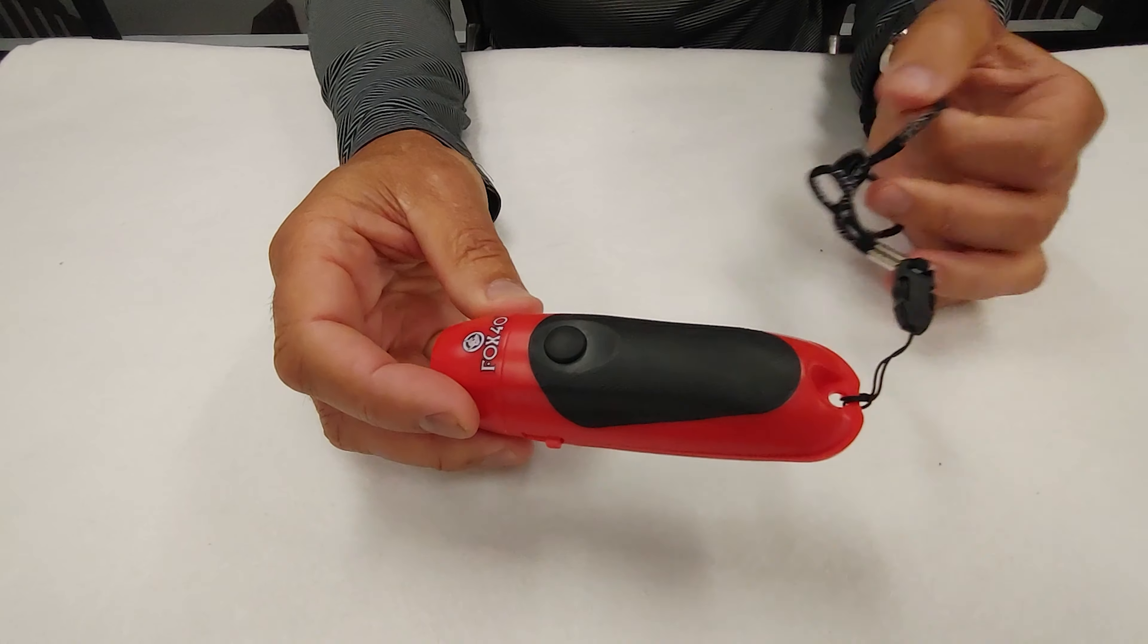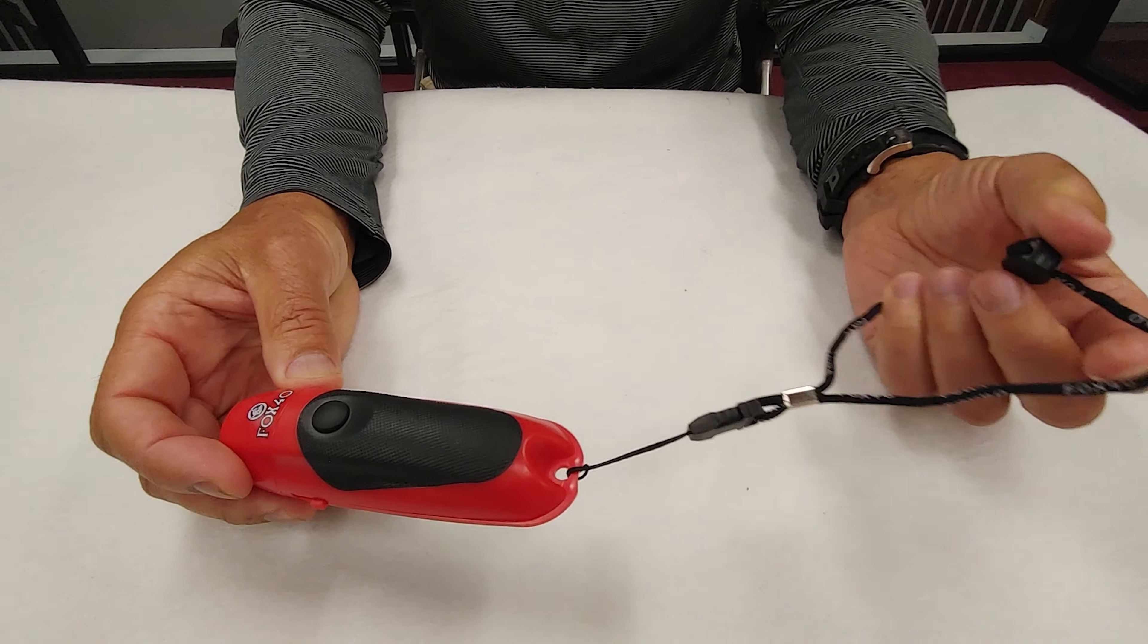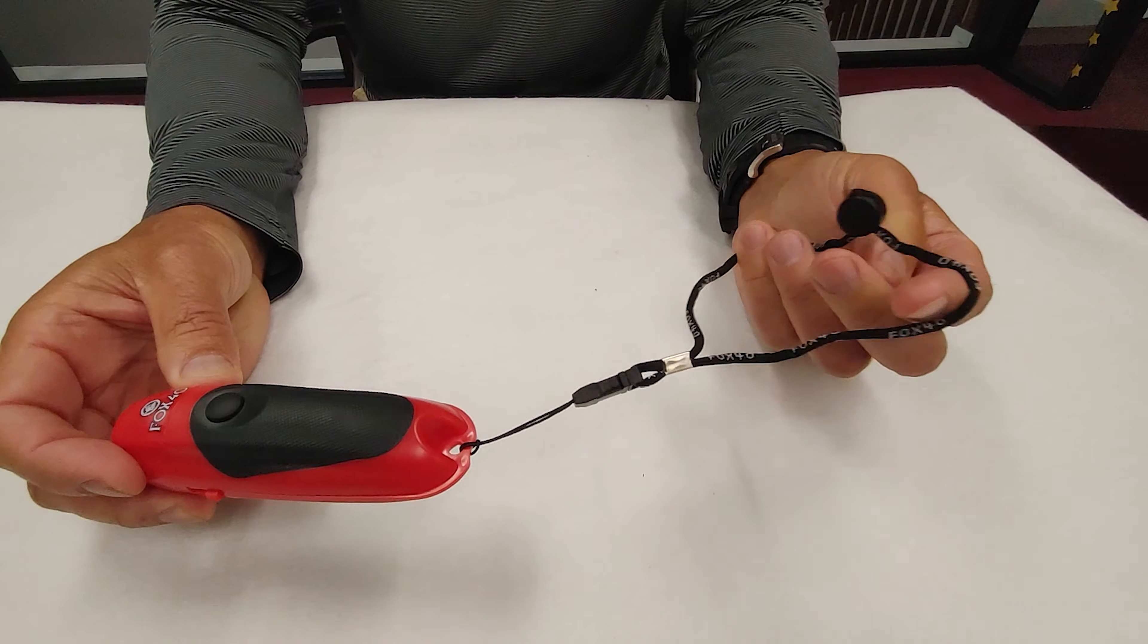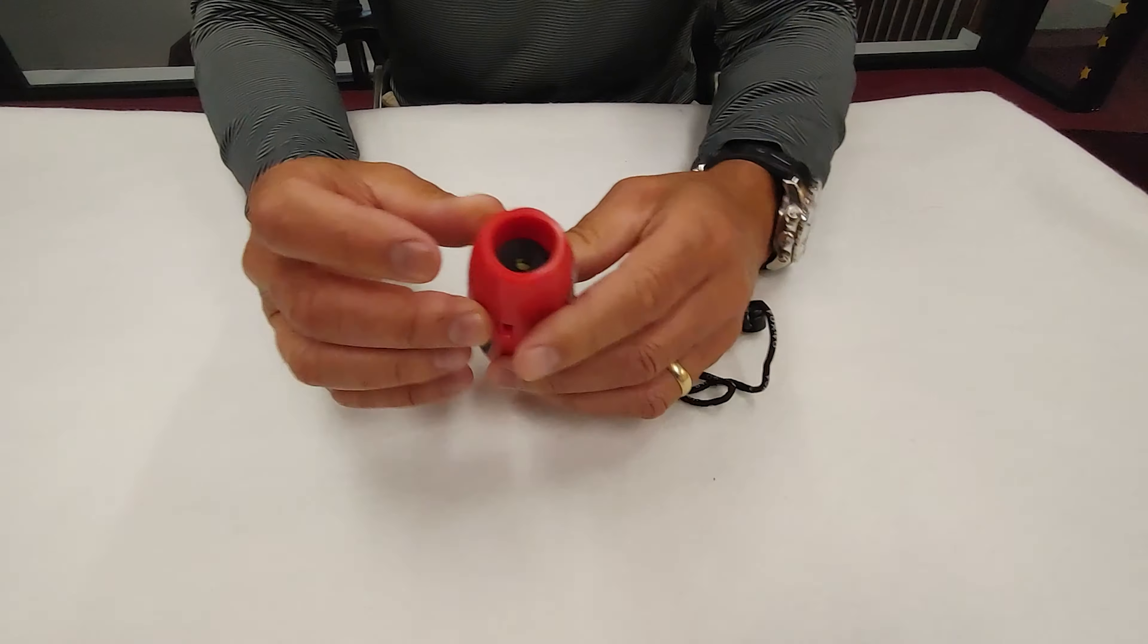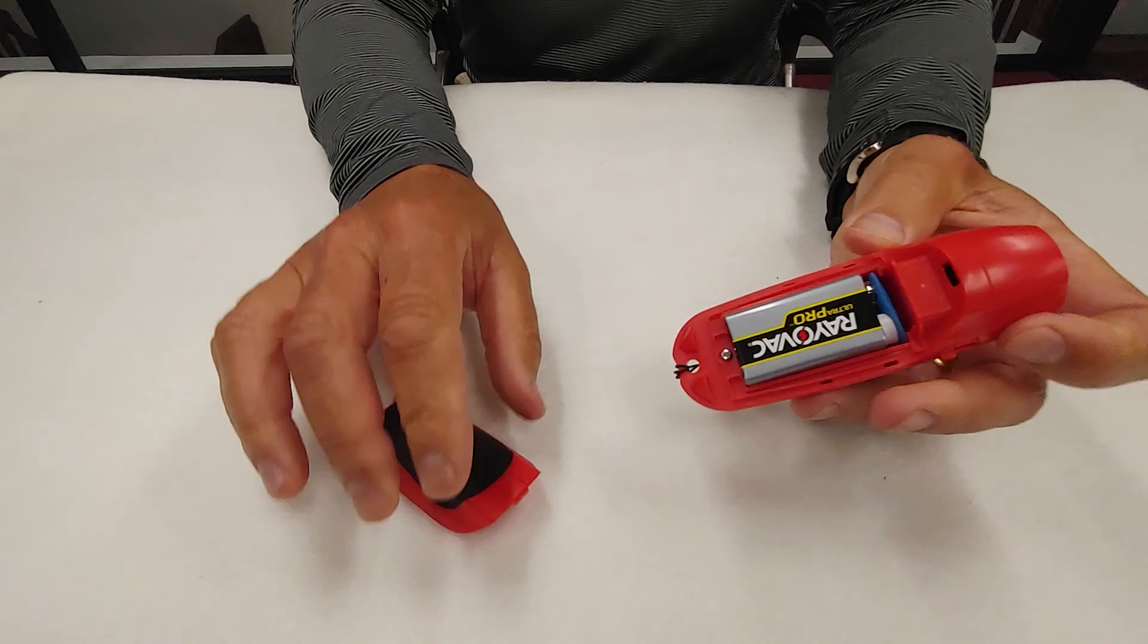This whistle also includes a lanyard. Now this is a short lanyard suitable to go around your wrist, not around your neck. It also includes a 9-volt battery.